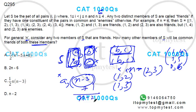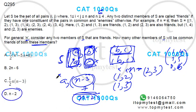So the total number of common friends is (n − 3) + 1 = n − 2. Option D is the correct choice. You can also verify by plugging in a specific number like n = 6 or n = 7 and checking which answer option gives the right count. That finishes this question.